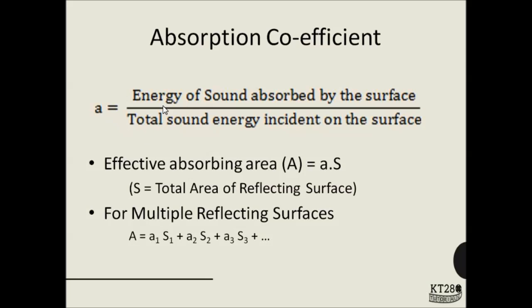The absorption coefficient is defined as the ratio of energy of sound absorbed by a surface to the total sound energy incident on that surface. Now suppose we have a surface with absorption coefficient A and total area S. The effective absorbing area is defined as the product of the absorption coefficient and the total surface area. This means that out of the total area S, only A square meters of area is actually absorbing the sound energy, whereas the rest of the area is reflecting the energy — hence the name effective absorbing area.